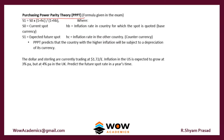The Purchasing Power Parity formula works like this: S1 = S0 × (1 + hc) / (1 + hb). Here, S1 refers to the expected future spot rate, S0 refers to the current spot rate, hb refers to the inflation rate in the country in which the spot rate is quoted, and hc is the inflation rate in the other country.